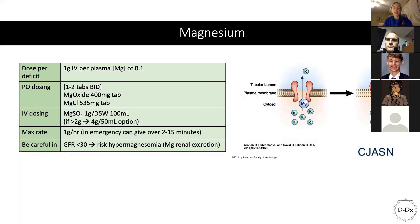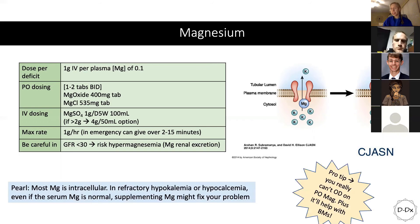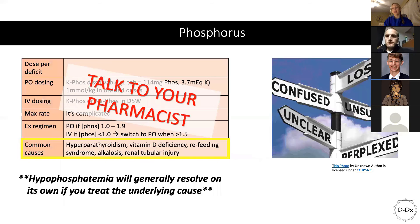Max rate for magnesium: similar to potassium, if you give it too fast you will kill the patient. Standard rate is 1 gram per hour. In an emergency — torsades or acute arrhythmia — you can give it over 2 to 15 minutes, but only if the patient is acutely unstable. Key pearl: most magnesium is intracellular, so even if serum magnesium is normal, go ahead and give magnesium if you're having trouble replacing potassium or calcium. You also really can't overdose on oral magnesium — it may cause diarrhea but won't significantly harm the patient.